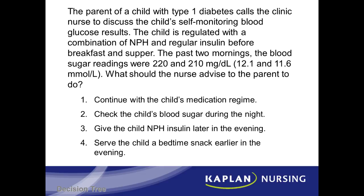So what does the nurse need to do? You need to check the child's blood sugar during the night, because you need to establish what's going on. Is it a sudden increase in blood sugar? That would be dawn phenomenon. Is it a rebound, where there's hypoglycemia then hyperglycemia? That would be Somogyi effect. Or does the blood sugar just gradually rise throughout the night? That would be insulin waning. Therefore, number two — my assessment answer — does indeed make sense, and that is the answer choice I am going to select.